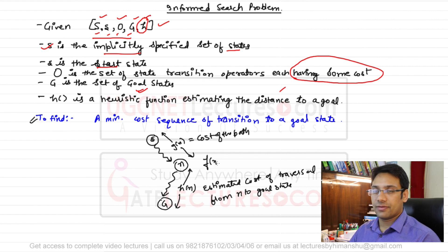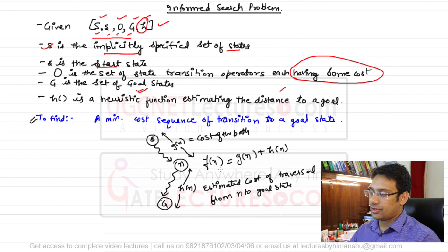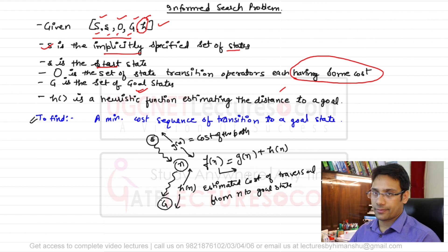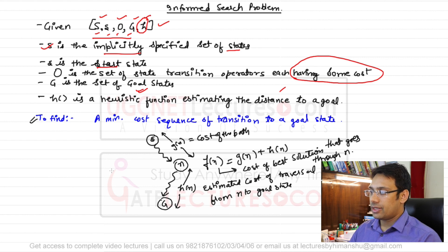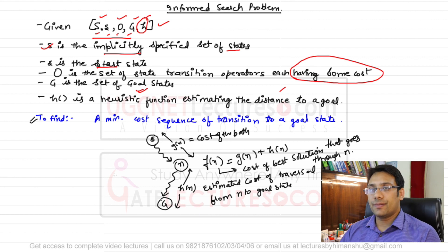f(n) is the total cost, given by f(n) = g(n) + h(n), where f(n) is the cost of the best solution that goes through n.